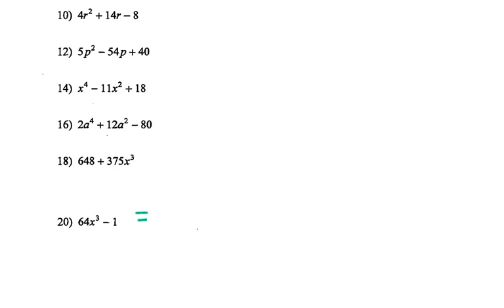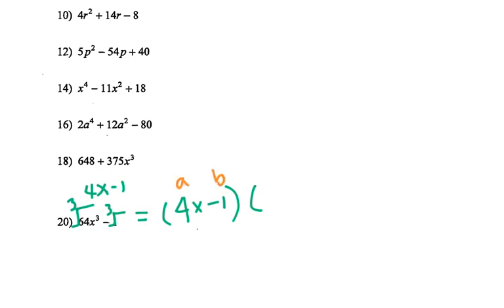Now let's go to the last question — number 20. This is cubic factoring, so take the cubic root. You get 4x and 1, so it's 4x minus 1. Then apply the formula: a is 4x, b is 1. a squared gives 16x squared, a times b gives plus 4x, then plus 1. That's the answer for number 20.